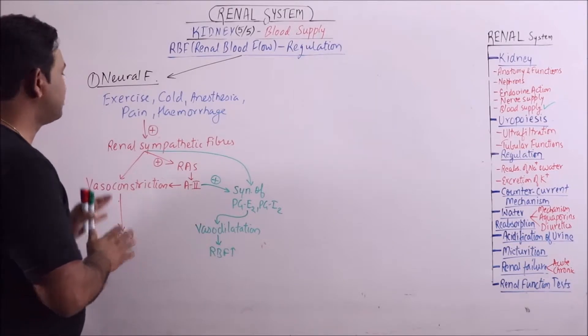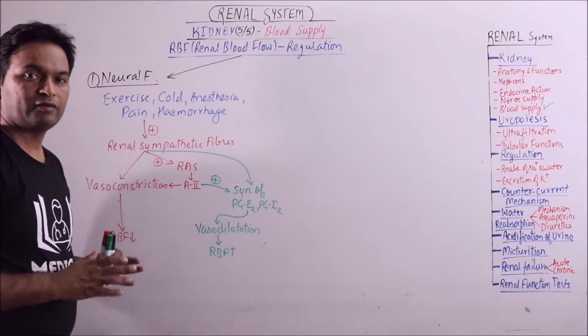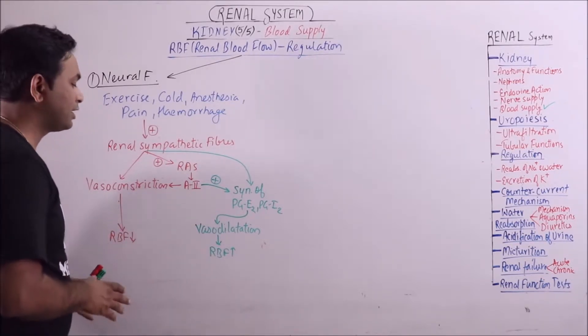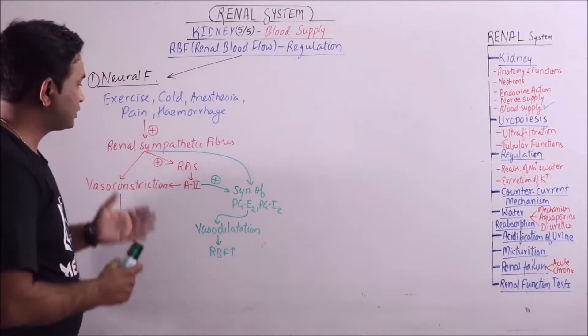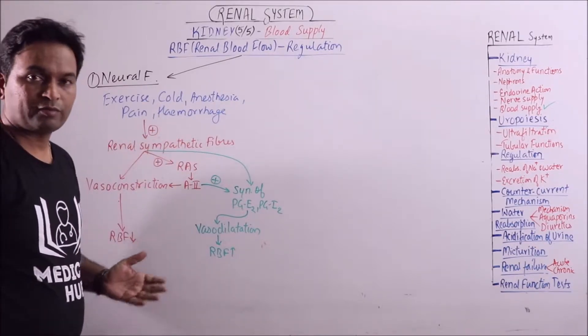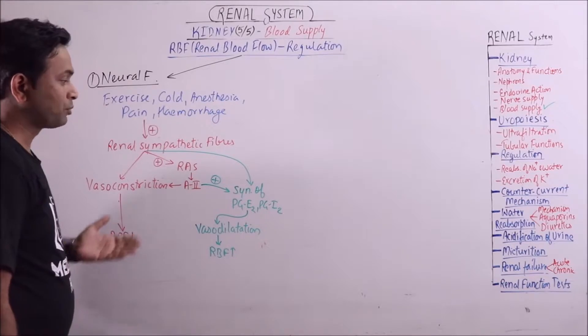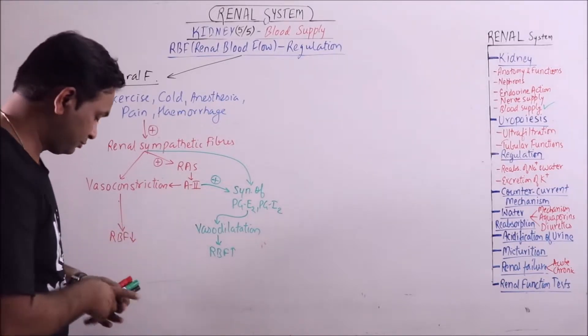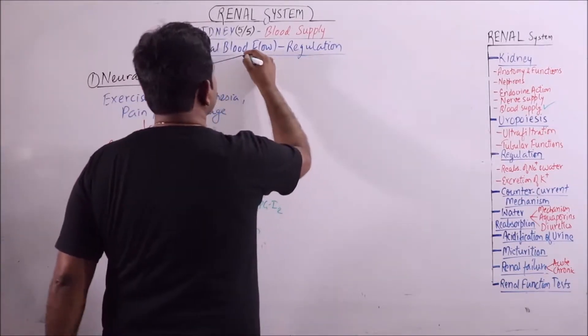Final outcome is that there is no significant change in RBF. So until and unless the sympathetic stimulation is prolonged and very intense, there is no significant effect on RBF. So this is the effect of neural factors.